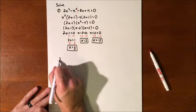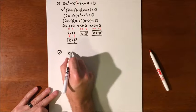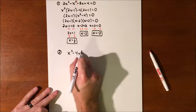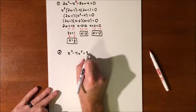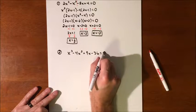So let's do one more. If we have an x to the third minus 4x squared plus 9x minus 36 equals 0.